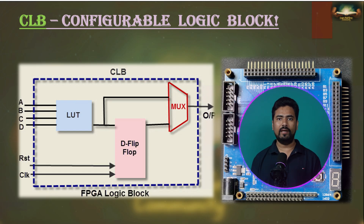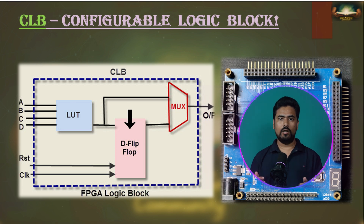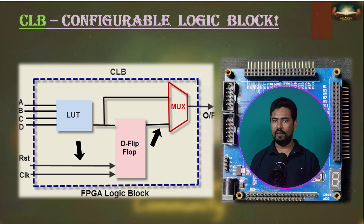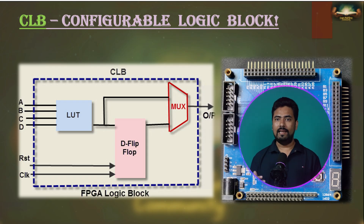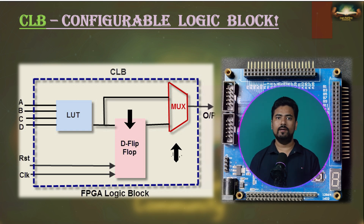FPGAs do not have individual gates like AND or OR gates; instead, they have lookup tables to implement all combinational logic. The output of the lookup table feeds into a D-type flip-flop, also known as a 1-bit register, and the output of the flip-flop also goes into a multiplexer. The flip-flop receives the clock and reset signals, and its output is connected to the multiplexer, which acts as a simple switch to select which input goes to the output F. In summary, a typical CLB includes a lookup table for implementing combinational logical functions, a flip-flop or register, and a multiplexer.